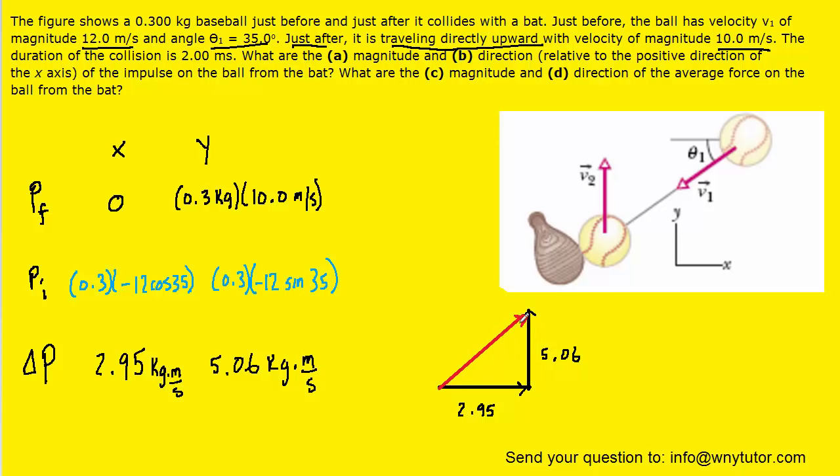We can simply use the Pythagorean theorem to find that value. And when we do that, we can see that the resultant change in momentum is approximately 5.86. And again, the unit of momentum will be kilogram times a meter per second. So this would be the correct answer to part A, the magnitude of the change in momentum.